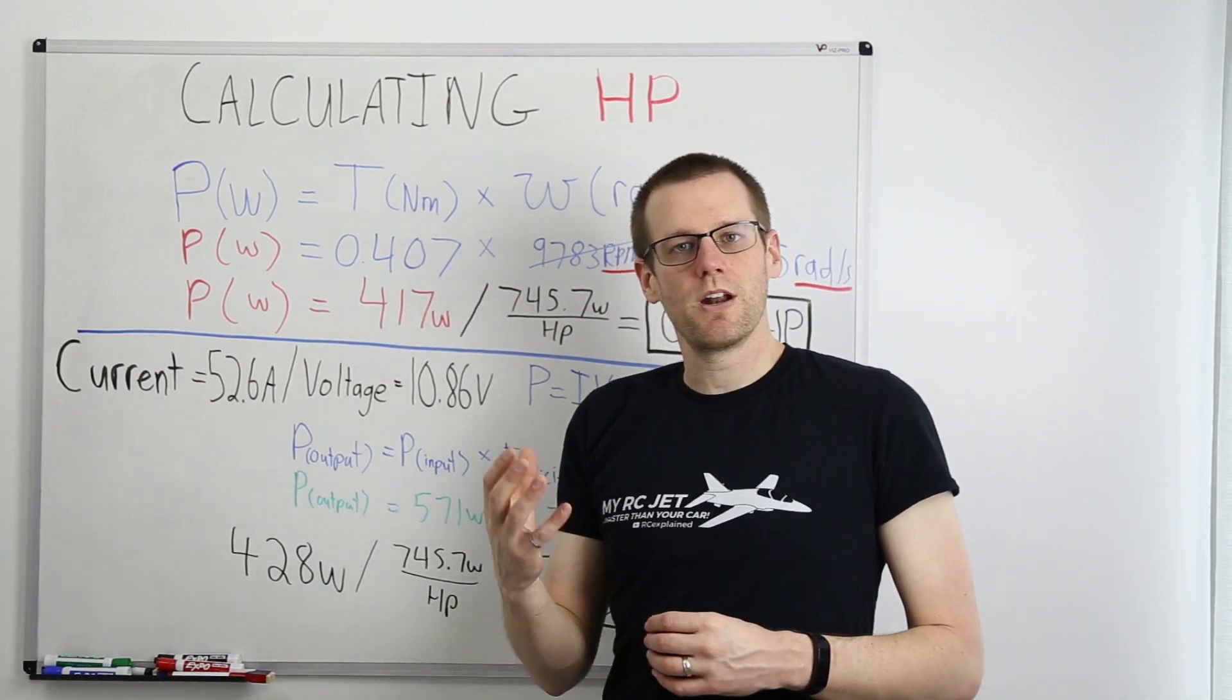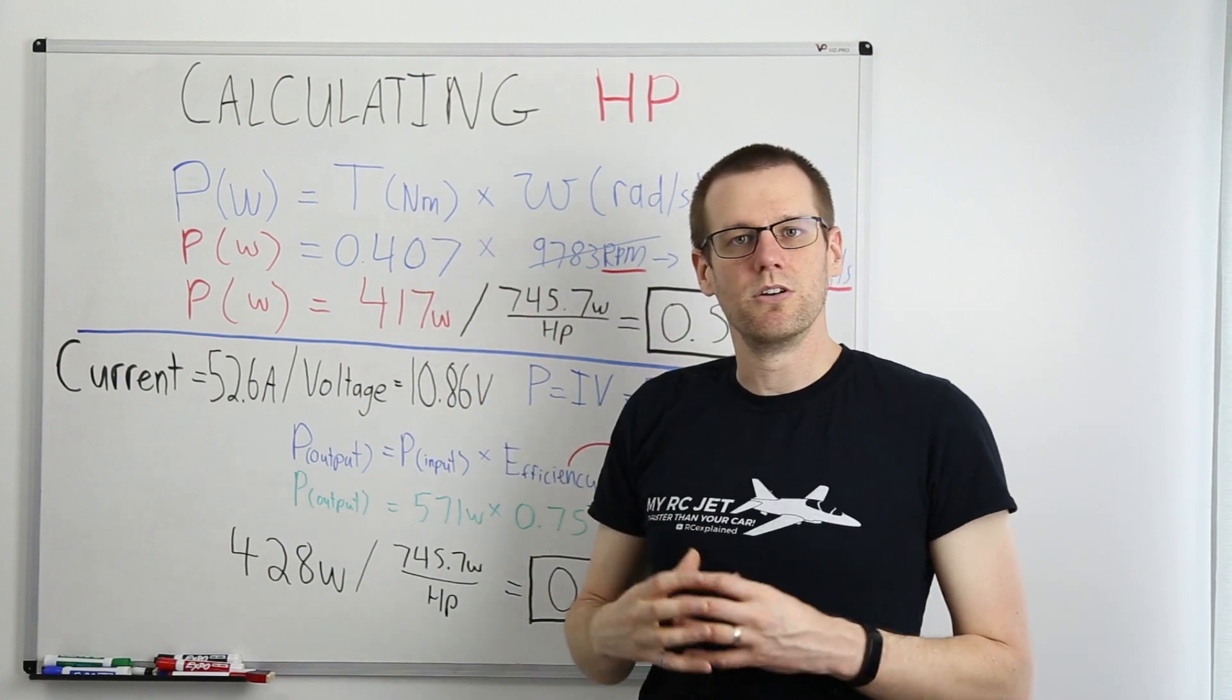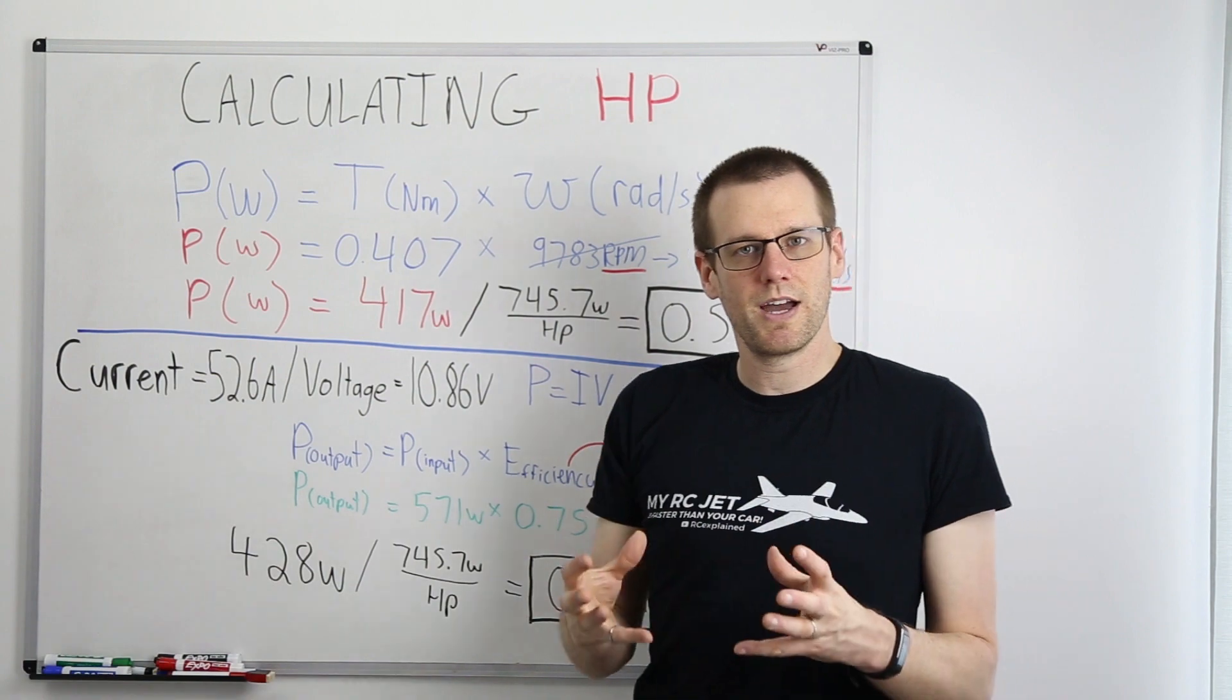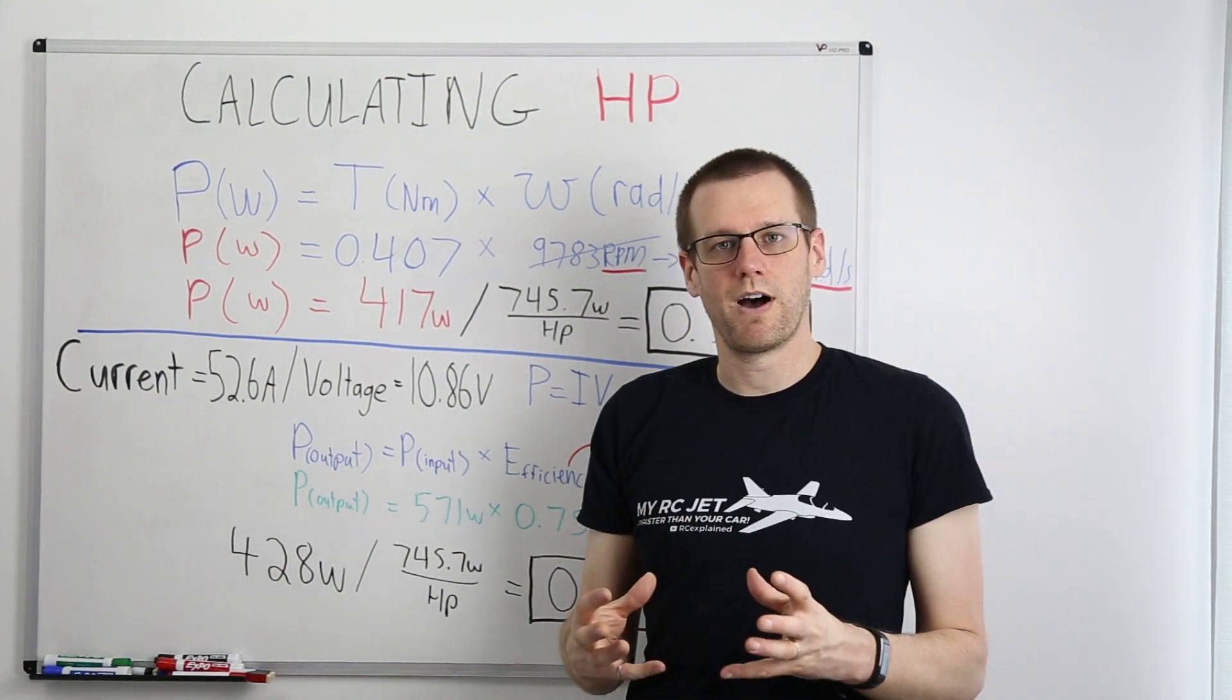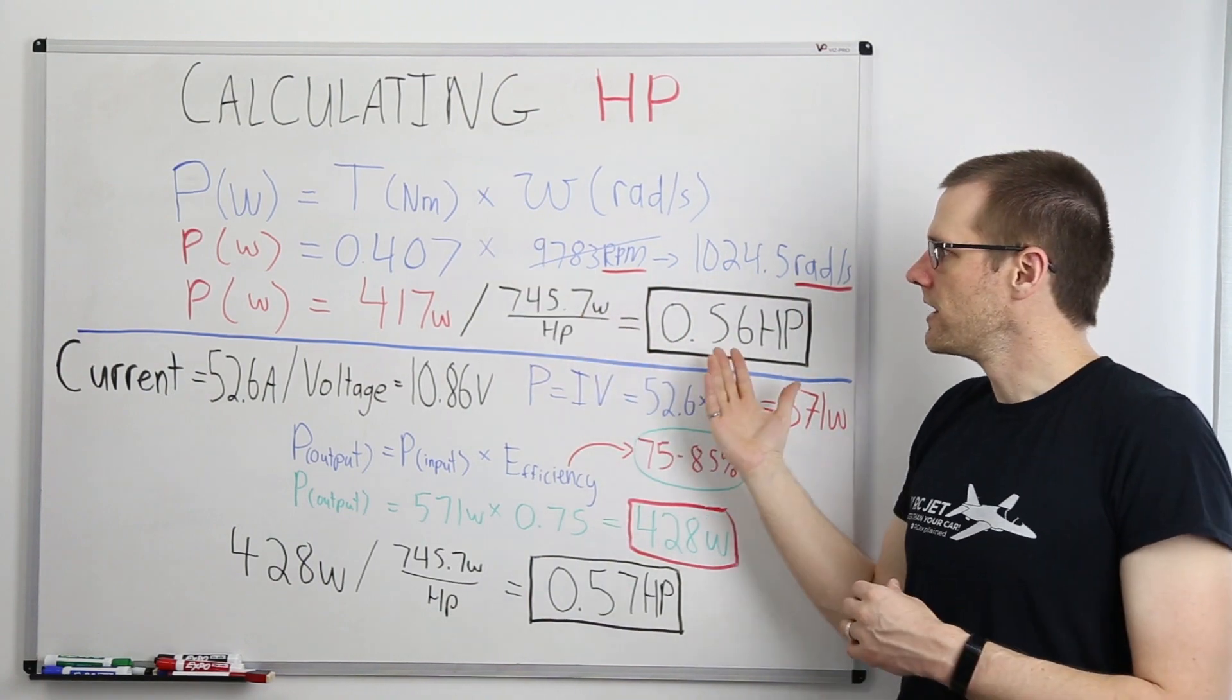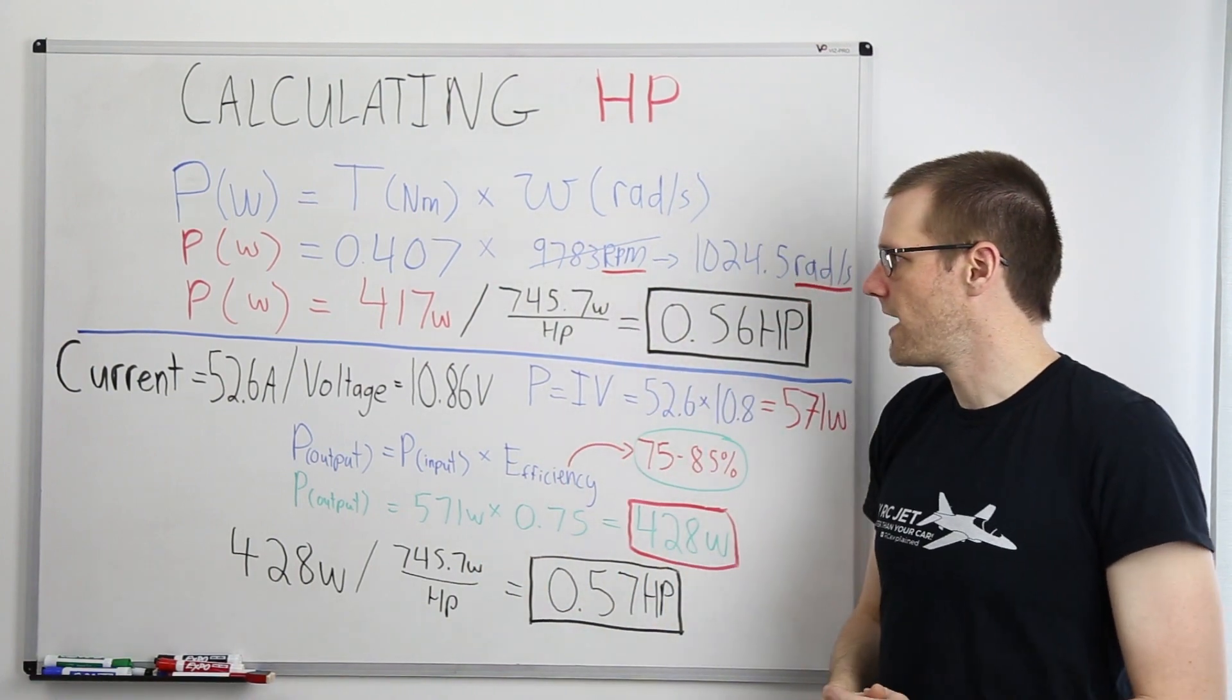We substitute our values in. This came right off of our dyno that we measured the motor at: 0.407 Newton meters multiplied by 9783 RPM. We convert 9783 RPM into radians per second, we get 1024.5. Then we multiply those two values together, and the resultant value we get is 417 Watts of power.